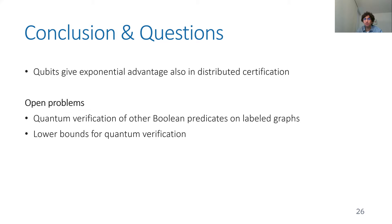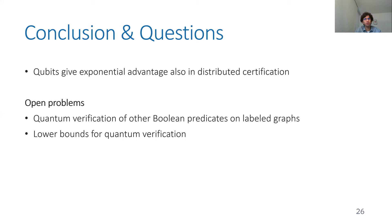In conclusion, quantum bits give an exponential advantage also for distributed certification — this was known before for centralized or distributed computation, but not for certification. The main open problem is to use this idea for verifying other Boolean predicates of labeled graphs, such as finding graph freeness or symmetry using quantum certificates. Another open question is proving lower bounds for quantum certificates; we have some directions but it is still not entirely clear how to do this. Thank you very much.